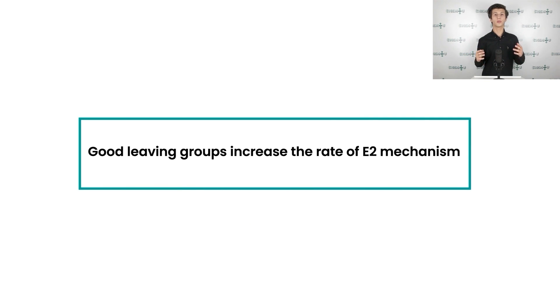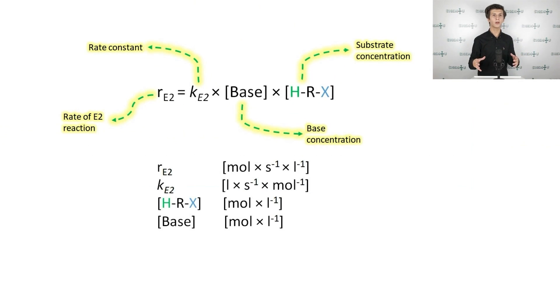The effect of the leaving group is the same as for E1 mechanism. The better it is, the faster C-X bond is cleaved, thus favoring E2 mechanism. It is important to note that good leaving groups often represent weak bases, and they should be weaker than bases initially used for elimination reaction. The influence of solvent is directly linked to the base strength and its effect, so let us study the effect of the base prior to that of solvent.